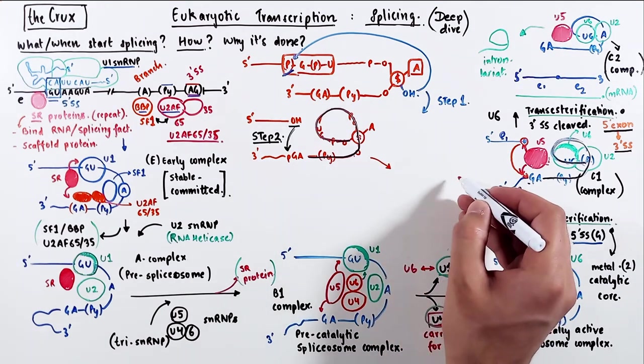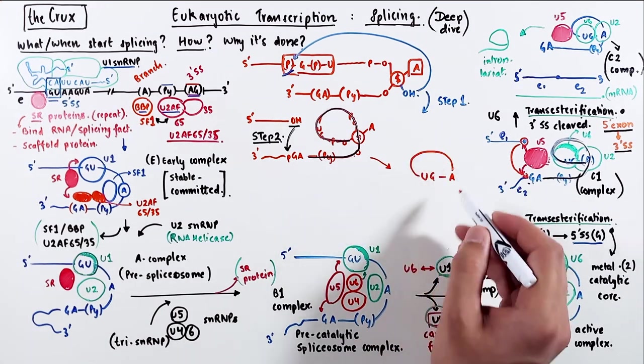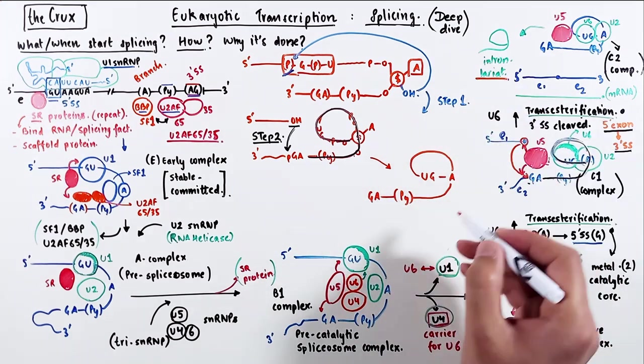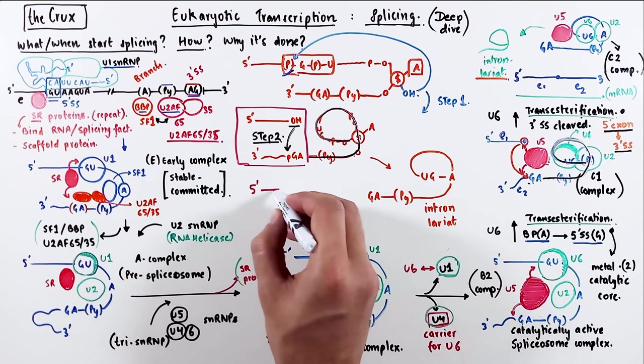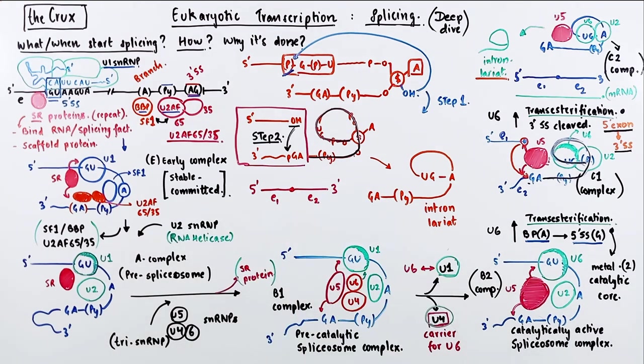the hydroxyl here attacks the phosphate of the guanosine at the 3' splice site. This releases the intron lariat away, and the exons are joined to give you the mRNA. And hopefully, that sort of clears up the details about this transesterification process.